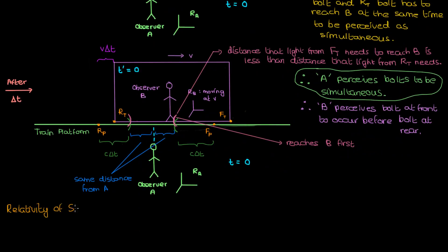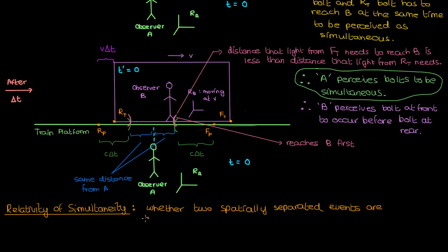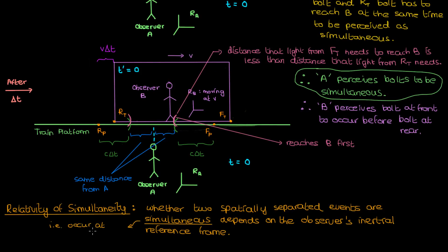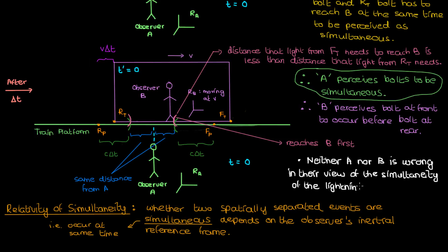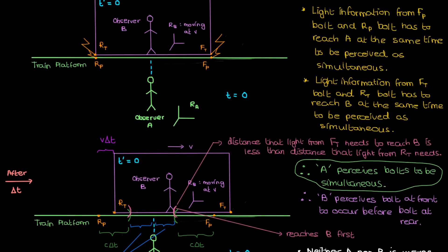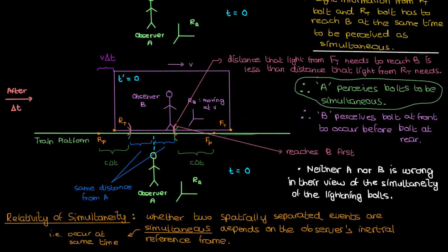This shows that an observer in one inertial reference frame may perceive two spatially separated events as simultaneous, while another observer in a different inertial reference frame perceives those same events to occur at different times. This phenomenon is called the relativity of simultaneity — whether or not two spatially separated events are perceived as simultaneous depends on the observer's inertial reference frame. Neither observer A nor observer B is wrong; both are in inertial reference frames and both observations are equally valid, since there's no such thing as a correct reference frame according to the first postulate.